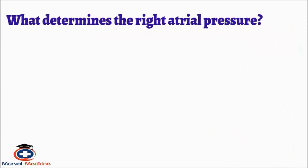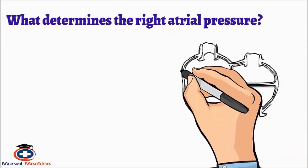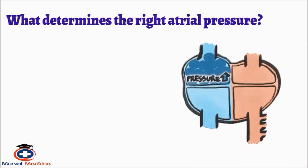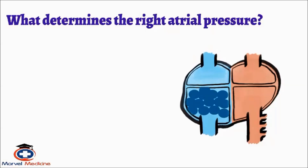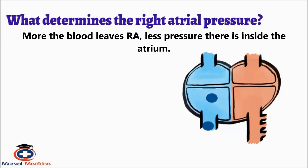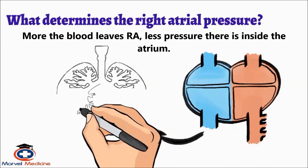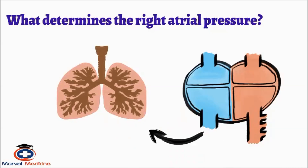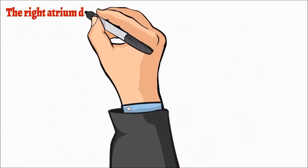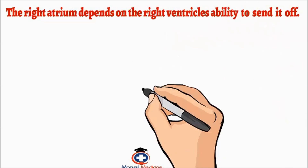So what determines the right atrial pressure? Number one: the amount of blood that is able to go from the right atrium to the right ventricle to the lungs. The reason why is because the more that leaves the right atrium, the less blood and pressure there is inside the atrium. In other words, the right atrium depends on the right ventricle's ability to send out blood.